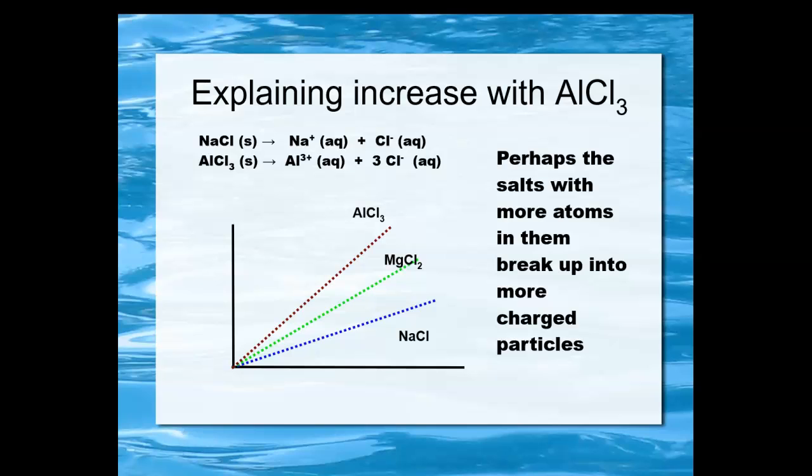And the aluminum chloride, since there are three chlorides for every aluminum, seems to be able to break up into an aluminum ion and three chlorides. The salts with more atoms in them seem to be breaking up into more charged particles, and the evidence for that is that the same number of drops of the same concentration solution gives you a higher conductivity with the aluminum chloride than with the sodium chloride or the magnesium chloride.